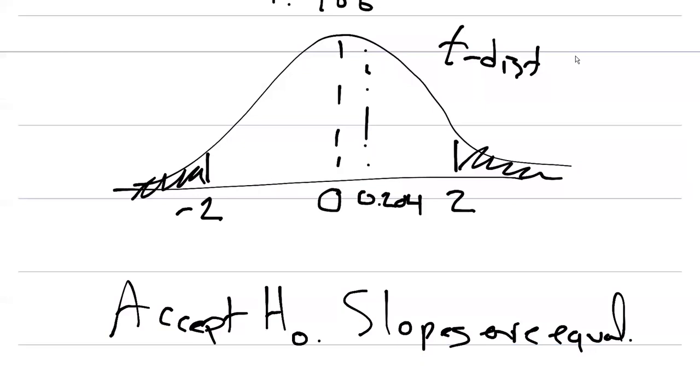This is good for the analysis of covariance. Analysis of covariance assumes that the slopes are equal so that you can add that covariate in your analysis of covariance.